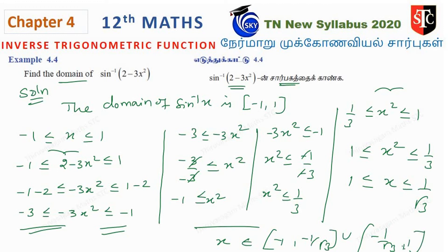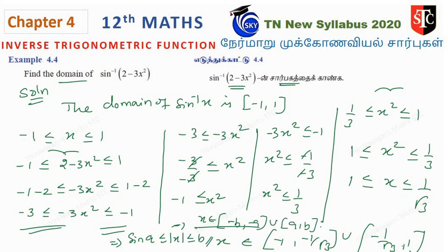So at last, for sin inverse of sin A, the general condition is: x belongs to minus B, minus A union A, B. This is the general condition for the domain value. Thank you.